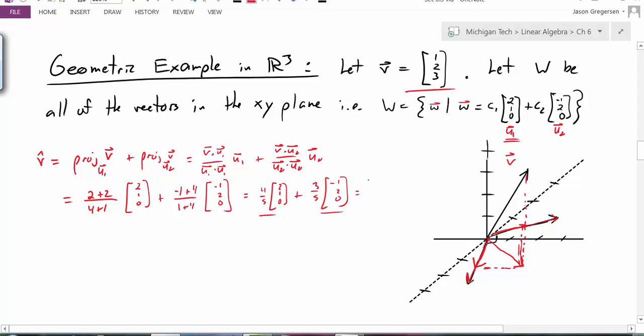I want to add these pieces up. I get 8 fifths minus 3 fifths in the first component, I would get 4 fifths plus 6 fifths in the second component, and 0 plus 0 in the last component. This looks like 1 and 2 and 0. So I get the vector 1, 2, 0.